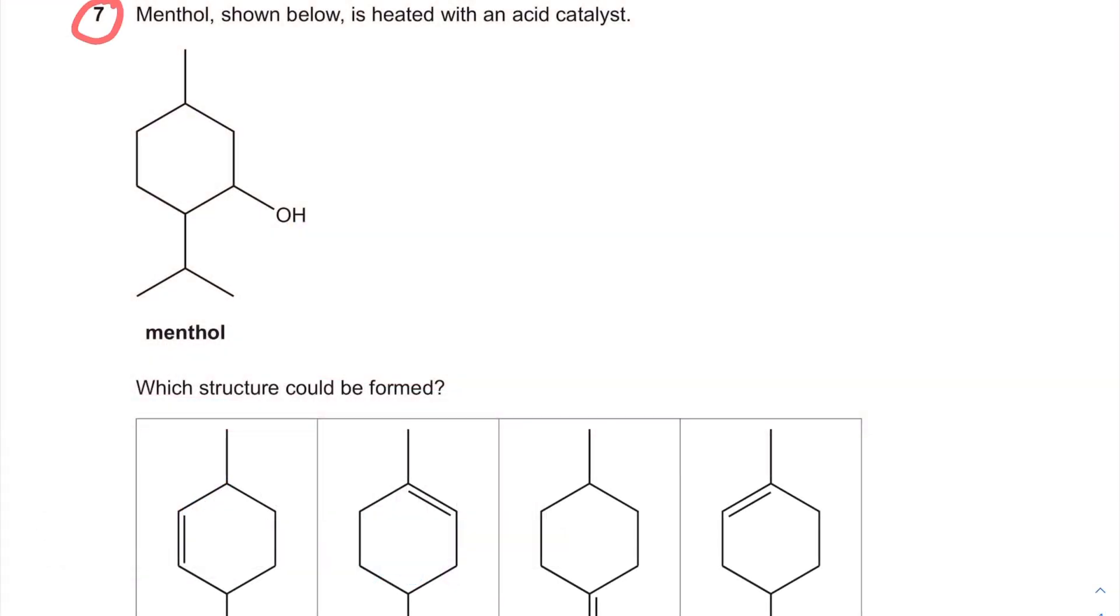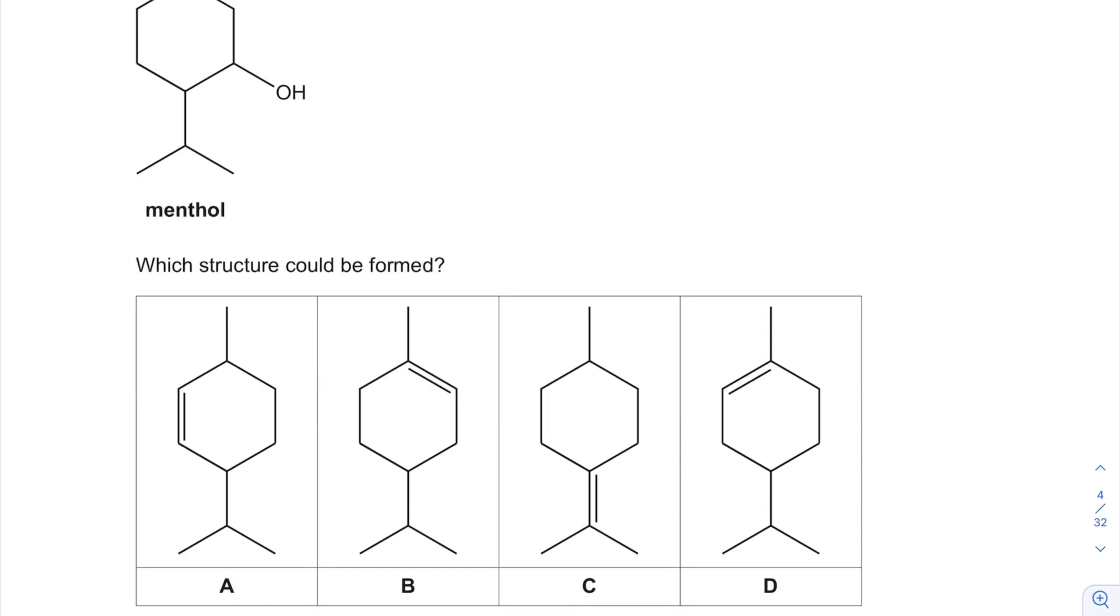Question 7. Menthol, shown below, is heated with an acid catalyst. Here's menthol. Which structure could be formed?